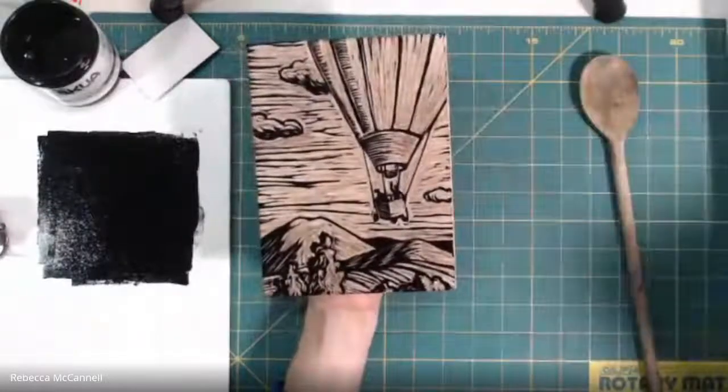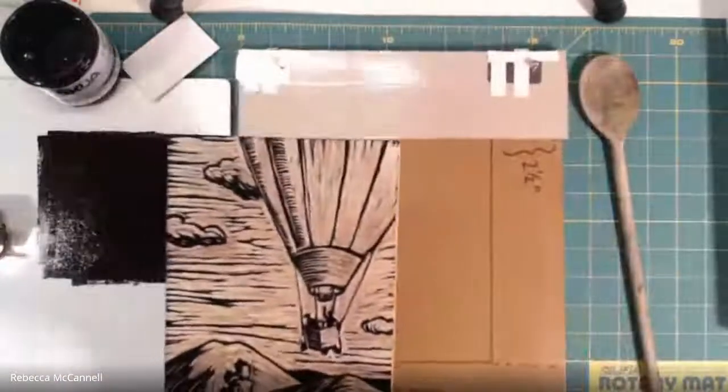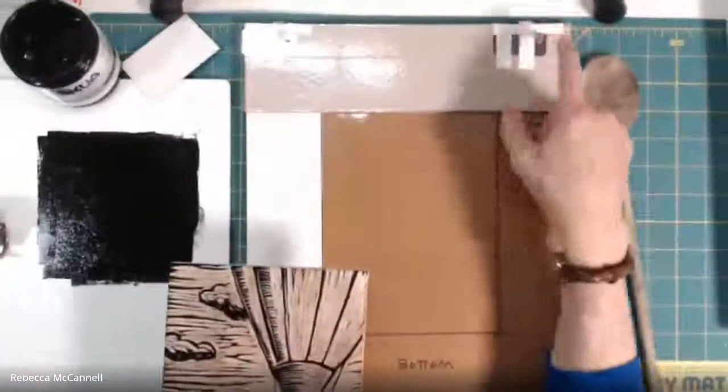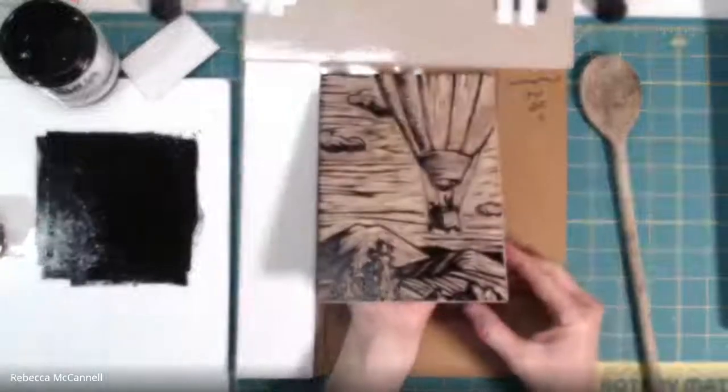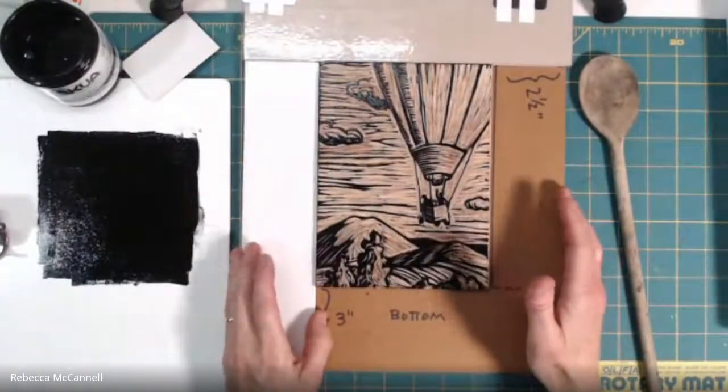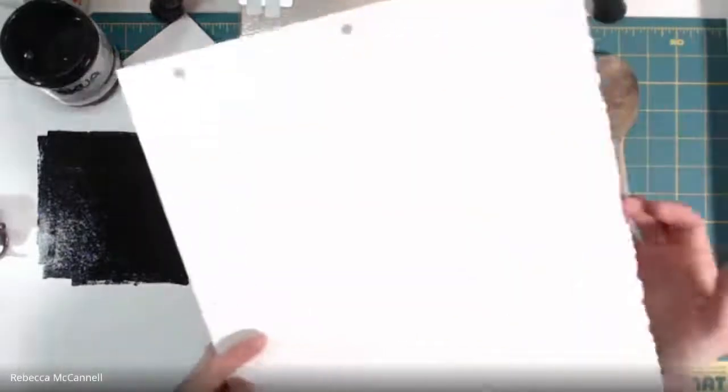Once you're pretty happy that the plate has been completely inked from edge to edge, get rid of your newsprint and replace it with your printing jig. This jig has the registration pins already on it. If you don't have registration pins, you can also tape your printing paper to the jig using a piece of removable tape like artist tape.